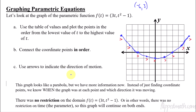The last thing before we go to the next problem: there was no restriction on the parameter t in this original function f of t equals (3t, t squared minus 1). That means t could go forever to negative infinity and forever positive. So this graph would have arrows on it when there's no restriction on the domain — little arrows that go off forever and ever.